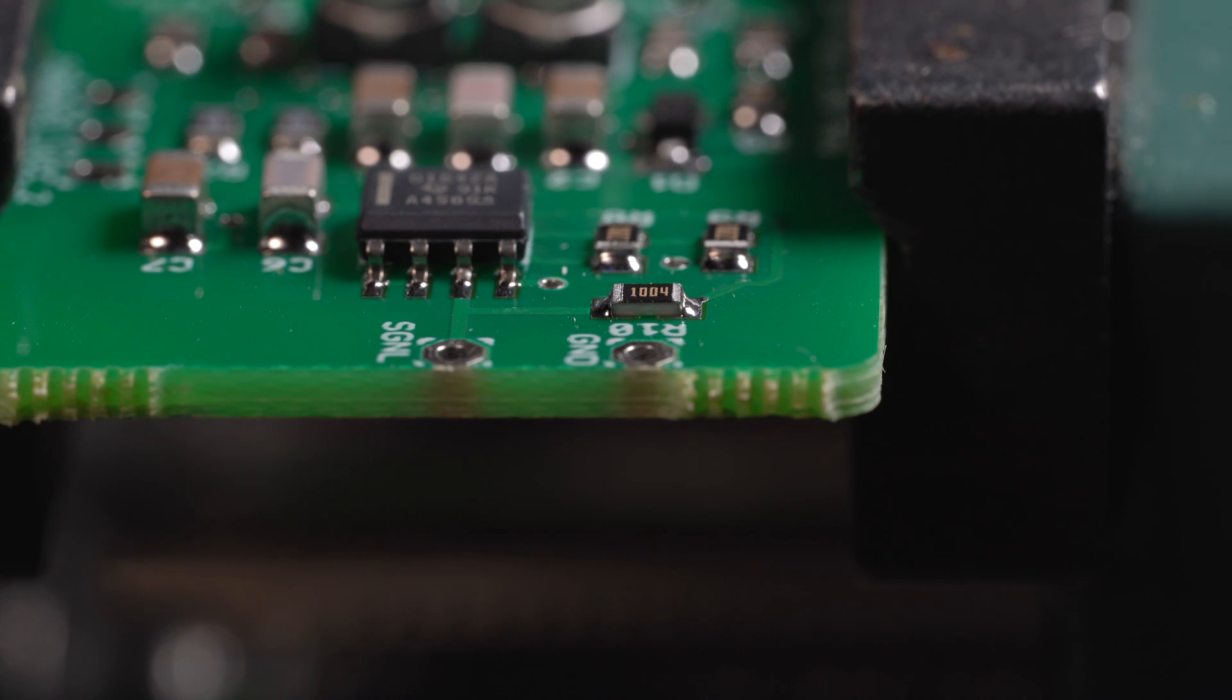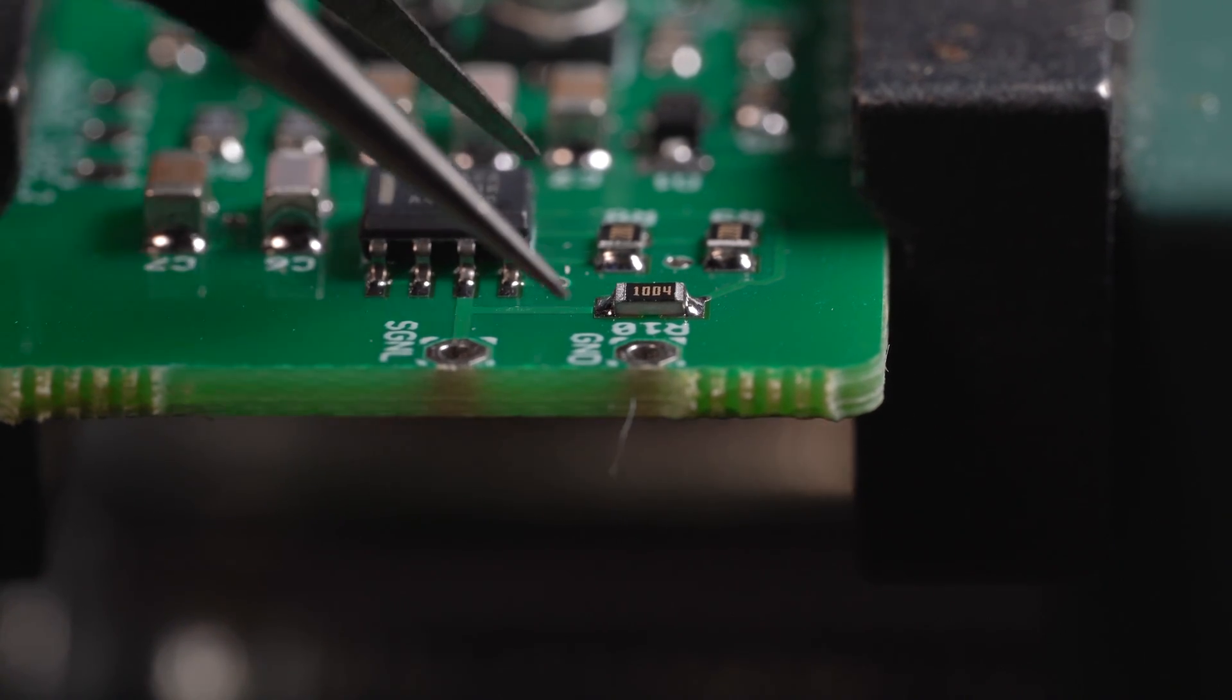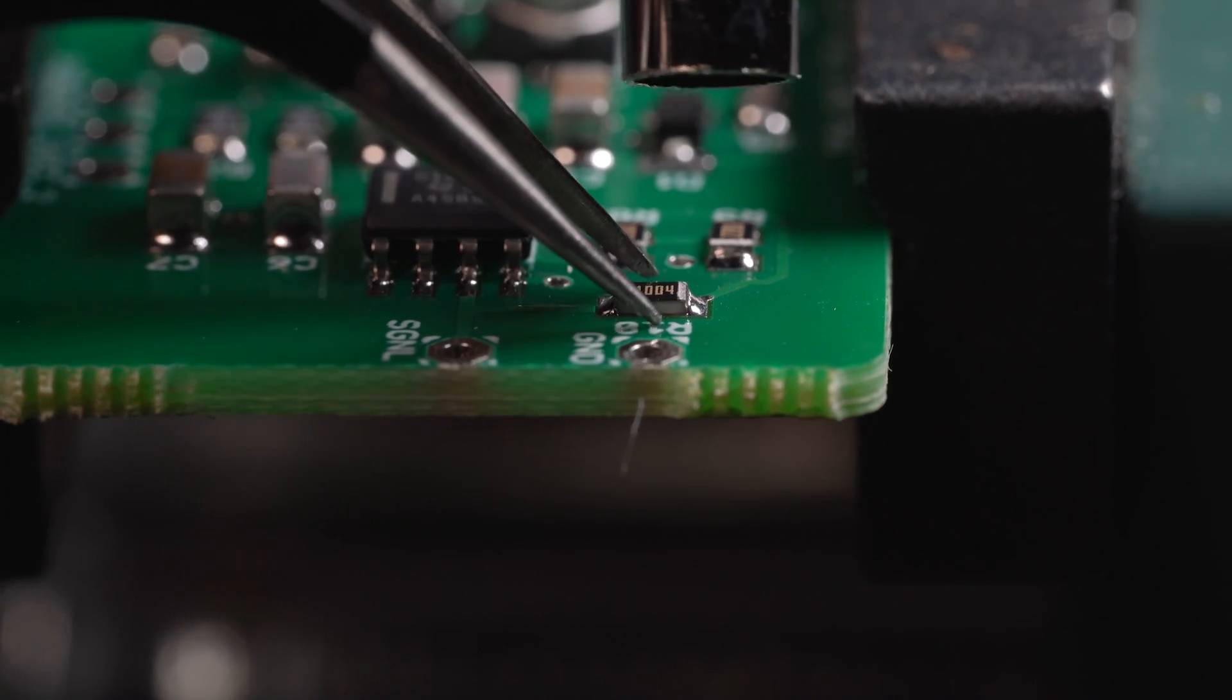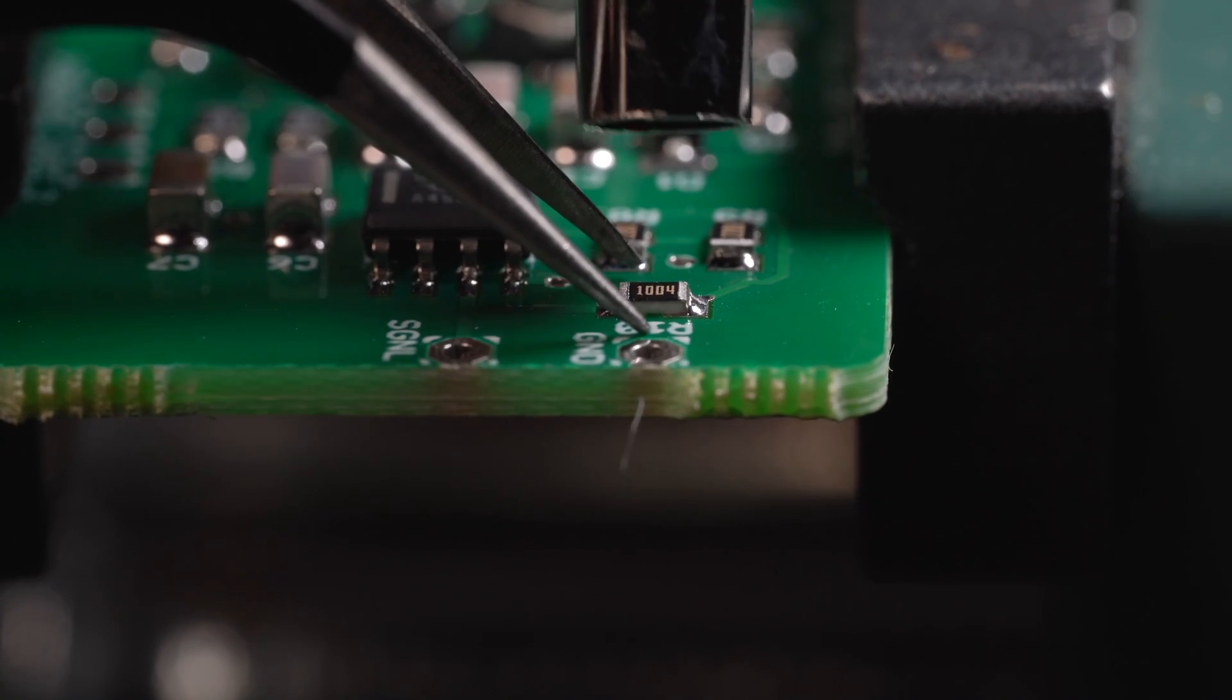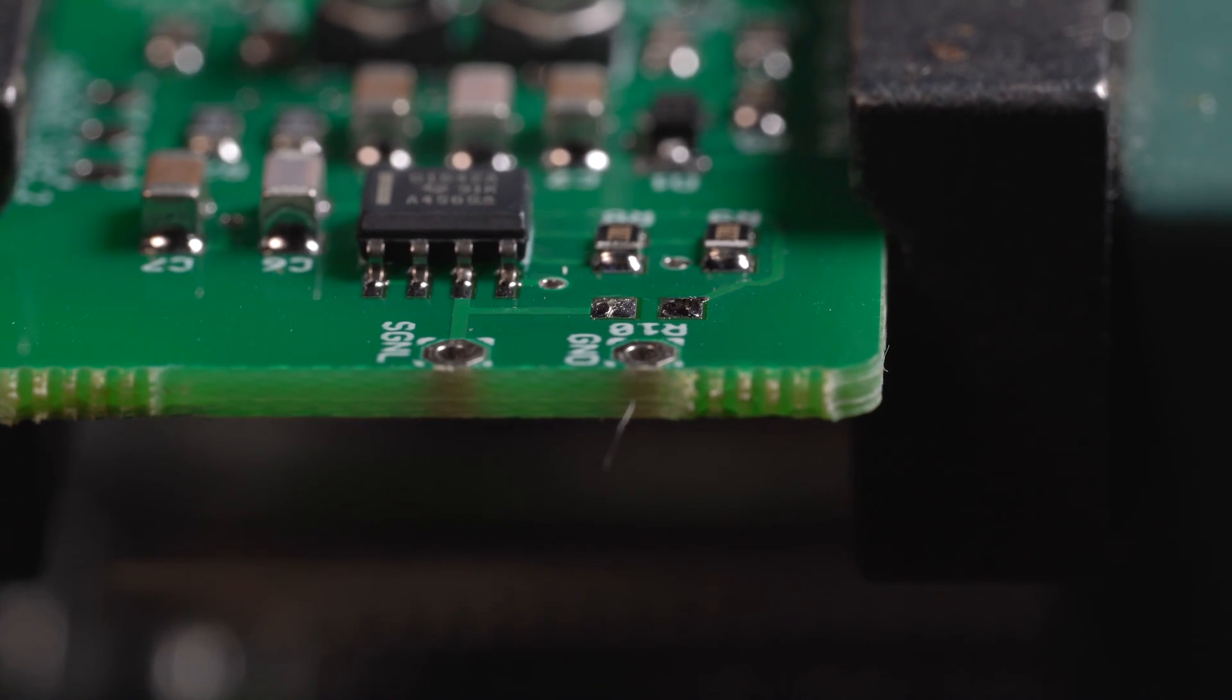Now what if you need to remove a surface mount component? That's easy. Grab our little hot reflow gun. Get some tweezers to hold on the component. Bring the reflow gun above it. Heat the circuit board and the component. And then once the solder becomes liquid, just grab that resistor and pull it right off. It's actually easier to do than through-hole components.